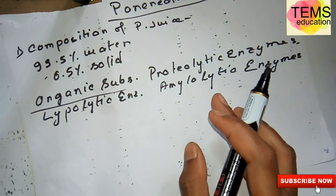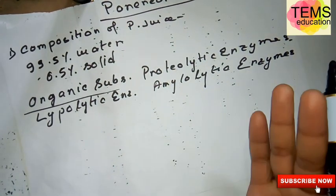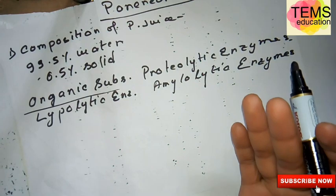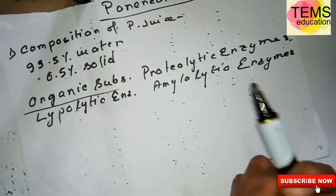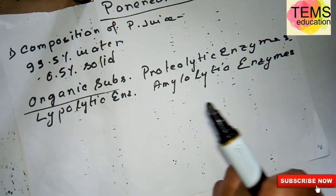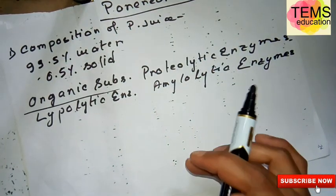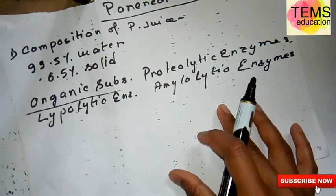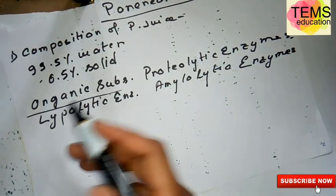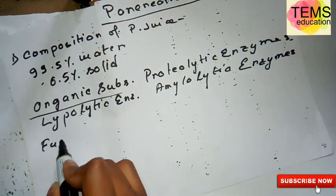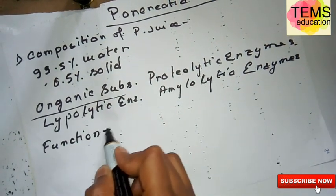Now let's talk about the inorganic substances of the pancreatic juice. The inorganic substances present in pancreatic juice are calcium, potassium, sodium, magnesium, bicarbonate, sulfate, and phosphate. These are the inorganic substances in the pancreatic juice.